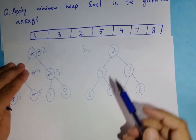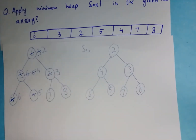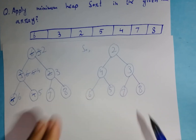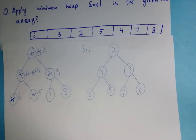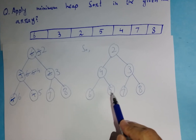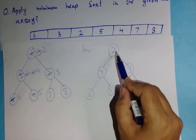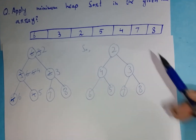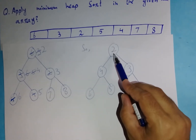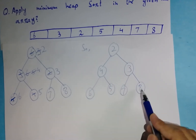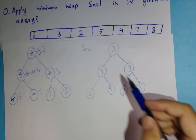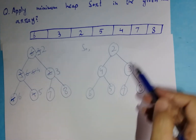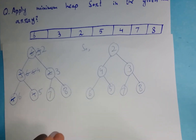When you apply minimum heap sort in this array, the resulting tree looks like this. You can see this tree meets the condition of minimum heap sort — every time the value of the child node is greater than the value of the parent node. For example: 6 and 5 are child nodes of 4, and both are greater than 4. Node 4 is greater than 2. Node 3 is greater than 2. Nodes 7 and 8 are greater than 3. So the condition is satisfied throughout.